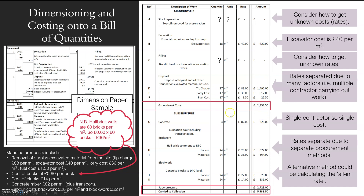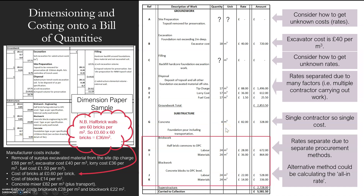Once I've done all that, I've got my groundwork total. Then I move on and look at concrete — I've got 3.94 meters cubed of concrete over here. Brickwork and blockwork is measured in meters squared.